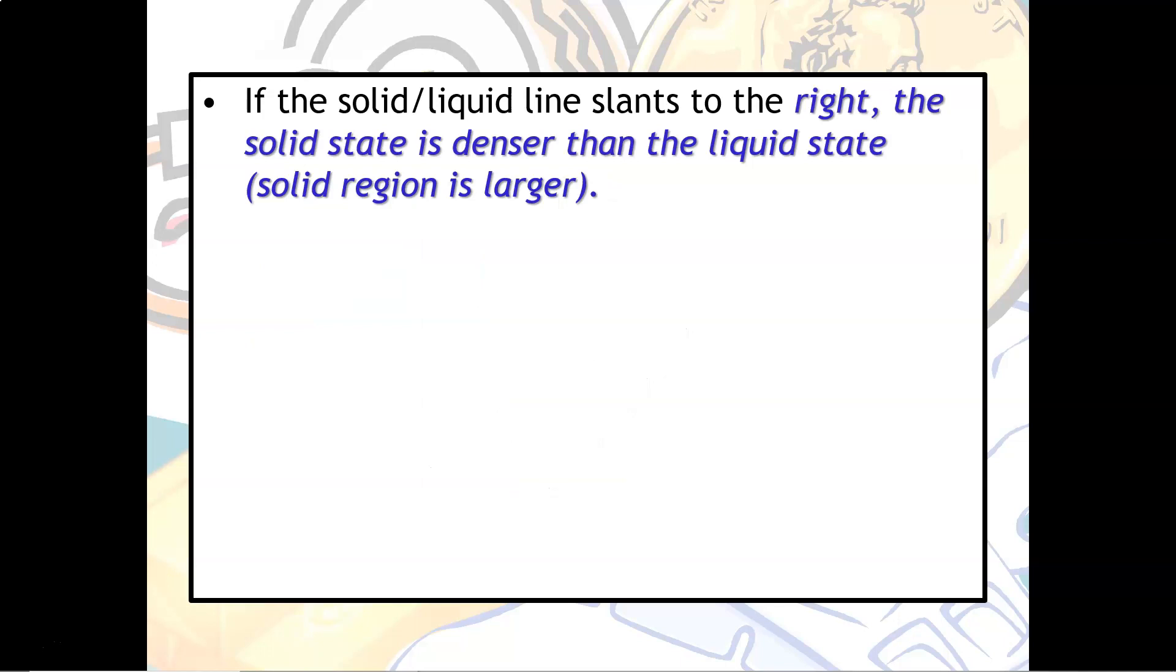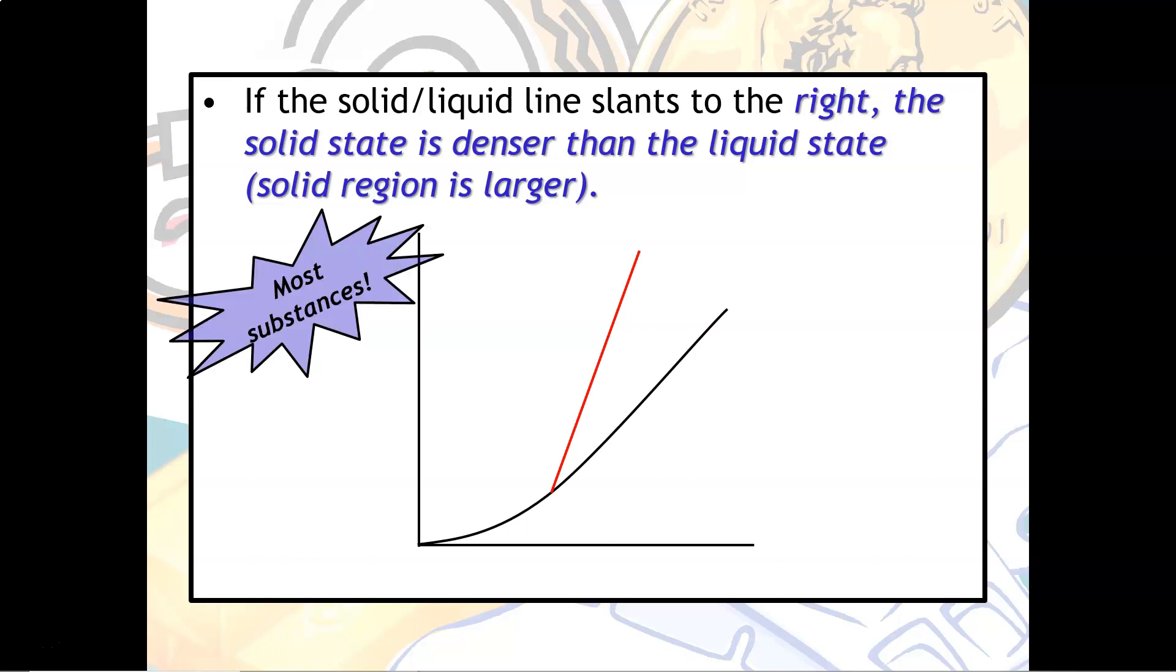Conversely, you could also have the solid liquid line slanting to the right. This is where you would expect to see the solid state be more dense than liquid state, because the solid region is a little larger. So that's the line we're referring to. And again, this represents most substances.